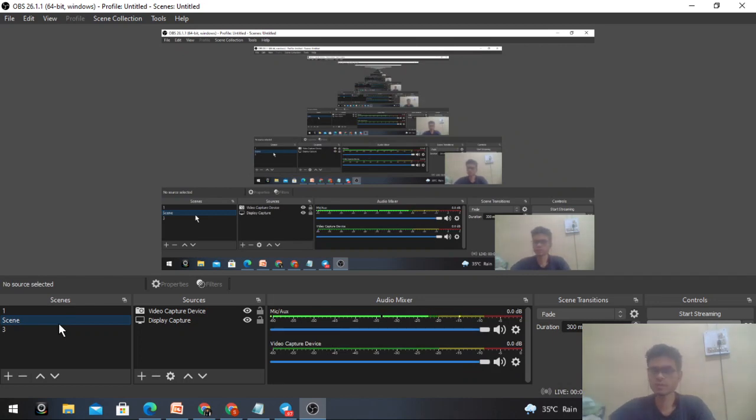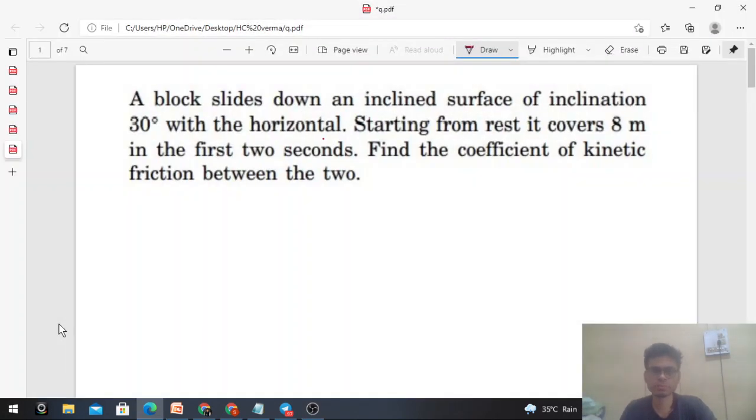Okay, hi everyone. So today let's discuss one interesting problem from H.C. Verma. What it says: a block slides down an inclined surface of inclination 30 degrees with the horizontal. Starting from rest, it covers 8 meters in the first two seconds. Find the coefficient of kinetic friction between the two.